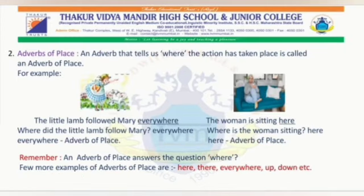Second, adverbs of place. An adverb that tells us where the action has taken place is called an adverb of place. For example: the little lamb followed Mary everywhere. Where did the little lamb follow Mary? Everywhere. Here, the word 'everywhere' is an adverb of place. The woman is sitting here. Where is the woman sitting? Here. The word 'here' is an adverb of place. Remember, an adverb of place answers the question 'where.'